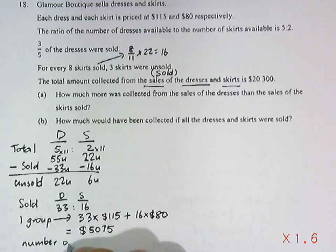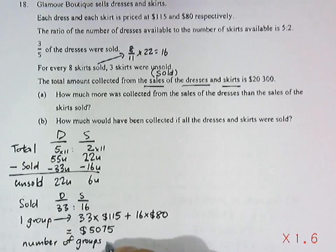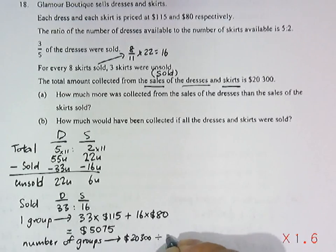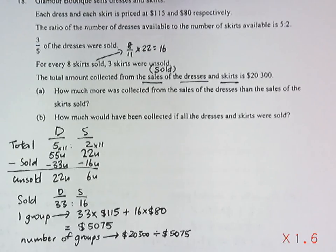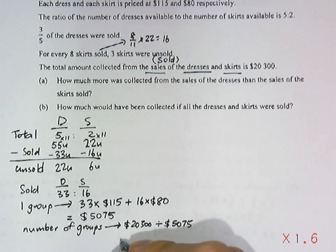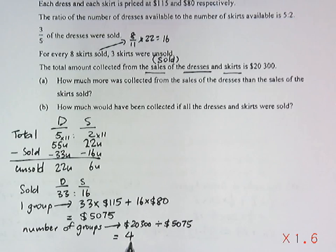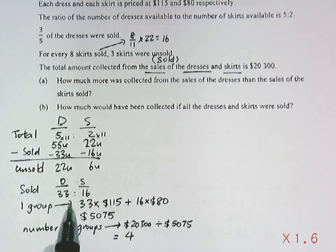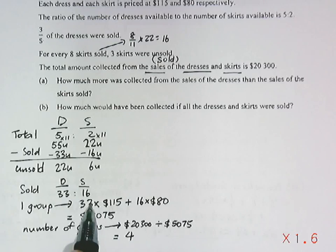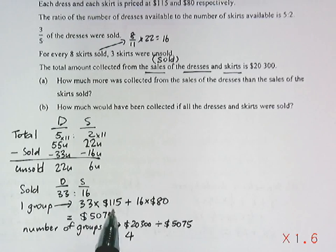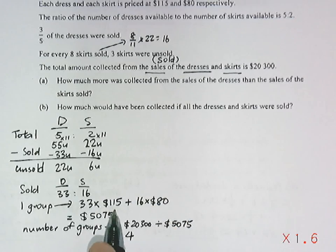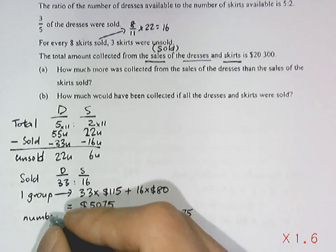Since the total sale is twenty thousand three hundred dollars, dividing by the cost per group gives four groups. Each group represents thirty-three dresses and sixteen skirts. The dresses in one group cost thirty-three times one hundred and fifteen dollars.